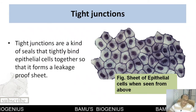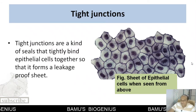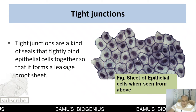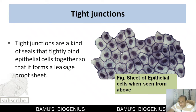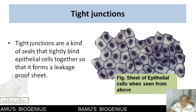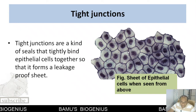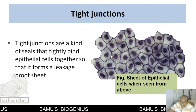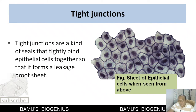Now let us discuss about tight junctions. You can see here this is the sheet of epithelial cells, and in this sheet the epithelial cells are stitched together — each and every corner of the cell is stitched together with the neighboring cells without showing any kind of intercellular space. Such a type of stitching of neighboring epithelial cells with each other is achieved with the help of tight junctions.